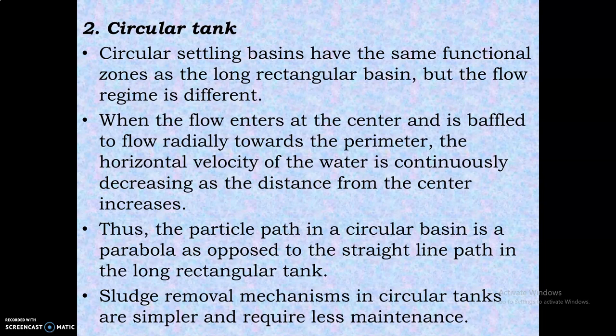The second type of tank is the circular settling basin. Circular settling basins have the same functional zones as the long rectangular basins. The sludge removal mechanism in a circular tank is simple and requires less maintenance.